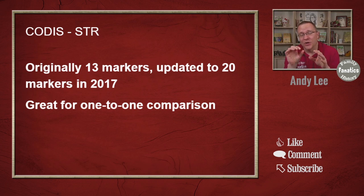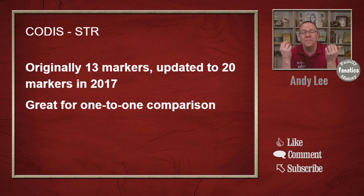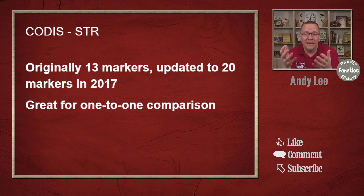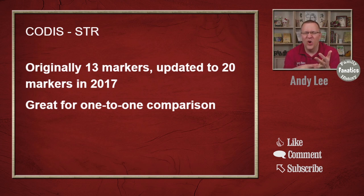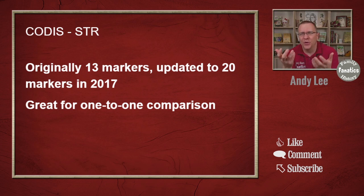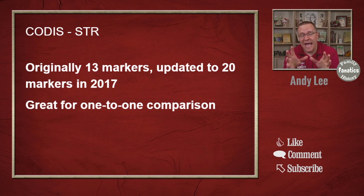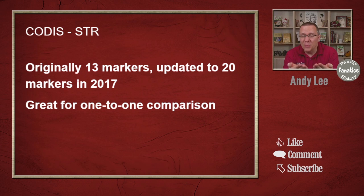Just 13 markers was great for one-to-one comparisons, and 20 markers is even better. This is plenty because even if there is a misread or a no-read — some error in the sample — as long as you're getting a majority of those 13 or now 20 markers, you're going to have enough information to make a definite determination of whether this unknown sample is the same as this known sample.